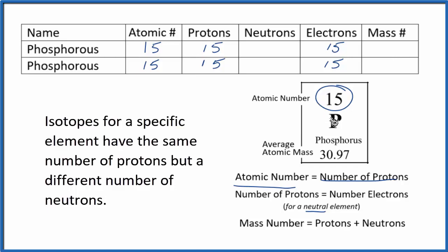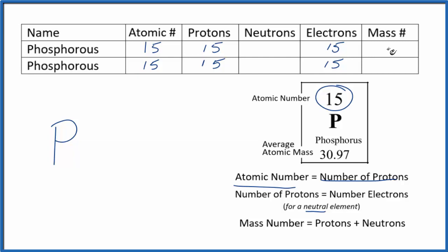The way we figure this out is if we're not given one of these, often you'll be given one and you can figure the other one out. If we're not given one, we go to the periodic table. We look at the average atomic mass. We round that to a whole number. So we'll round that to 31.